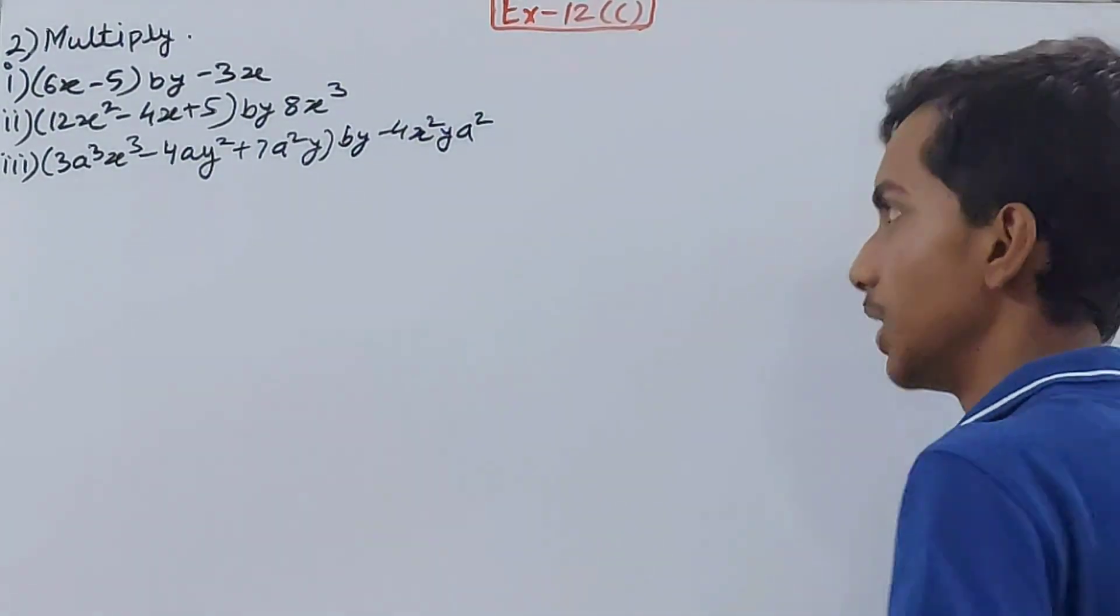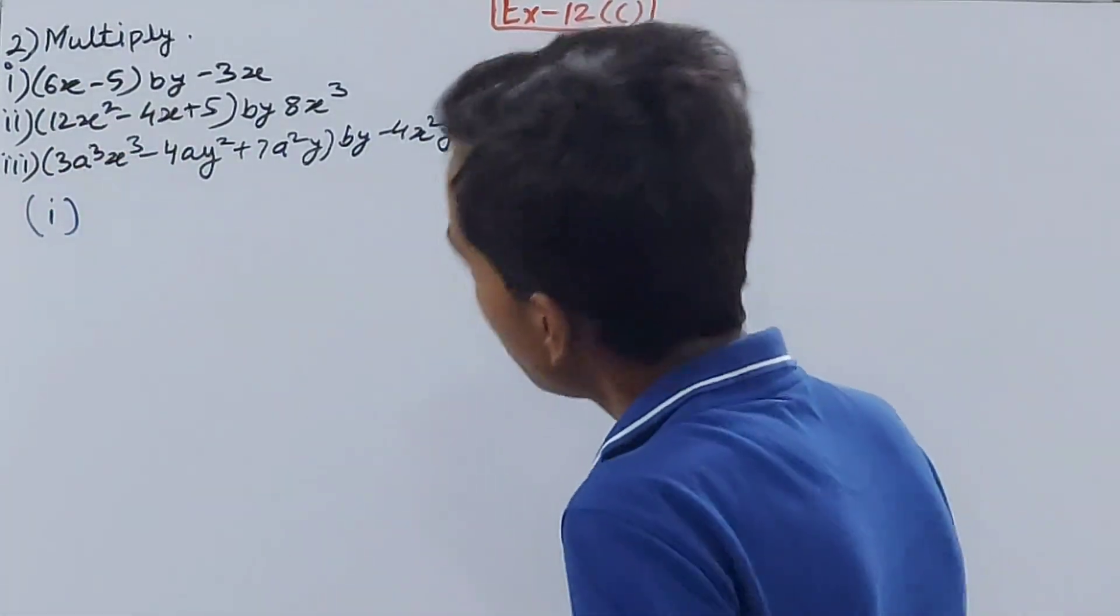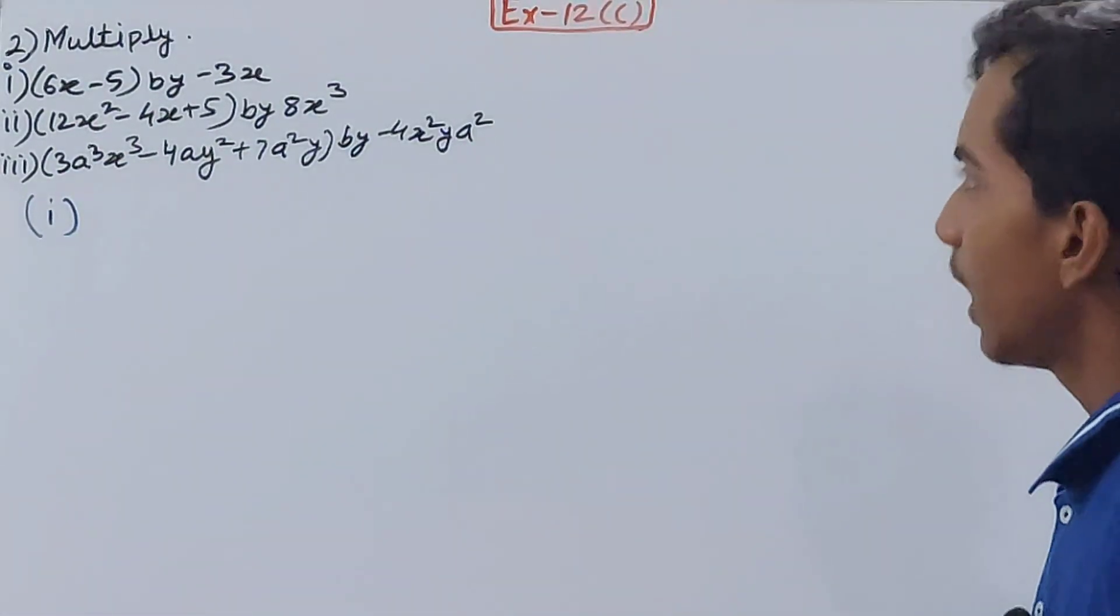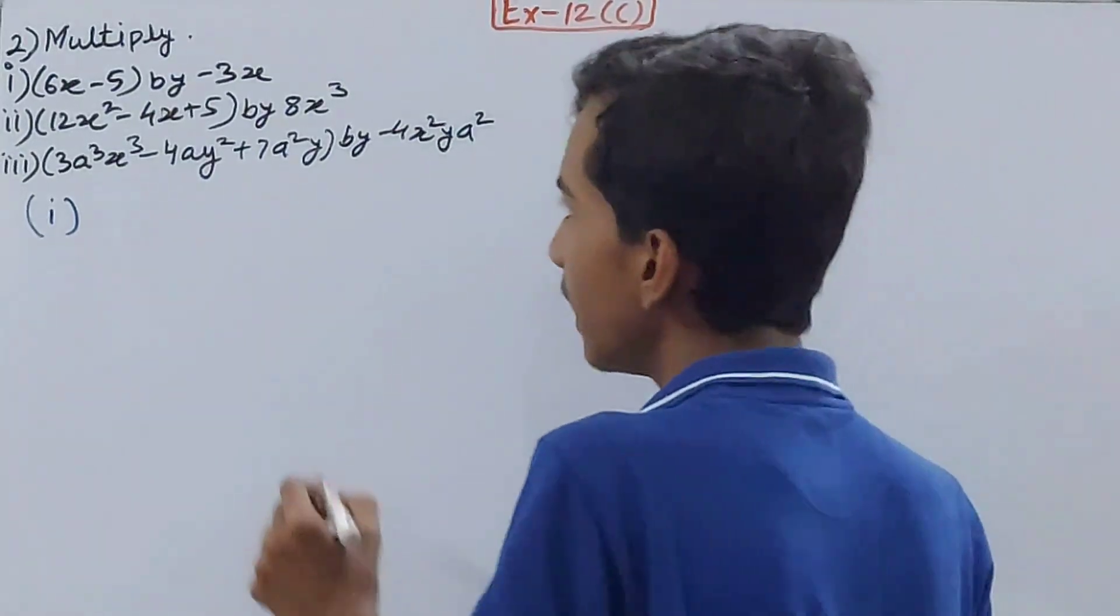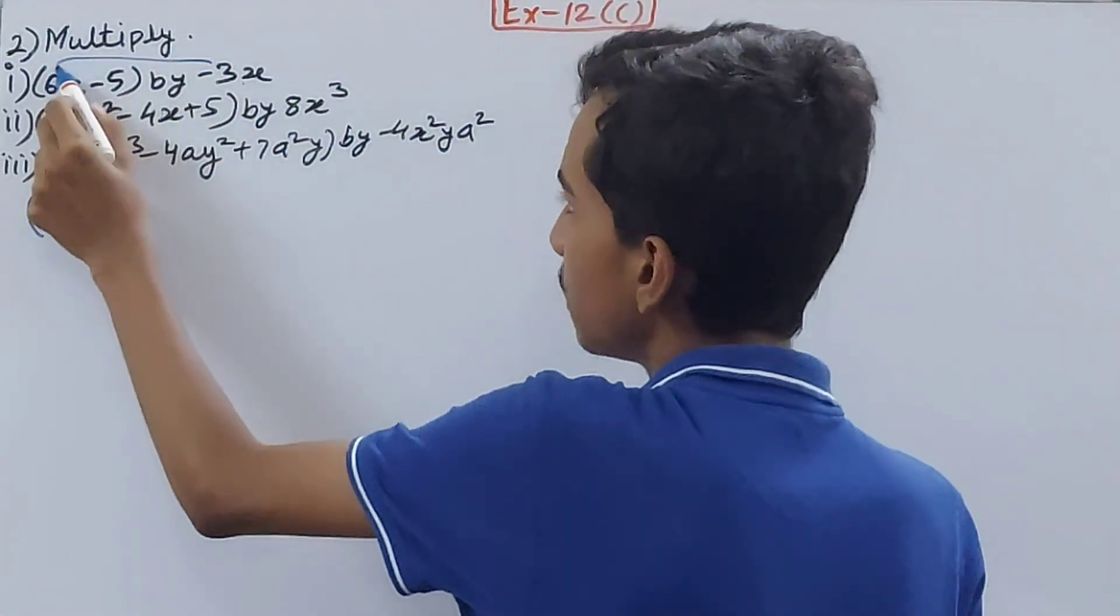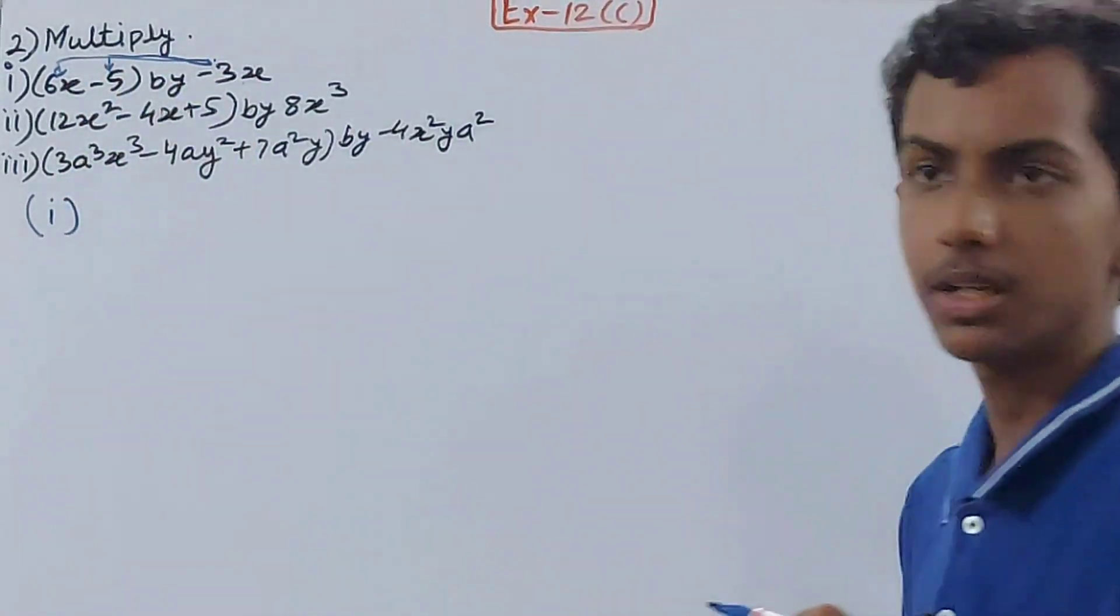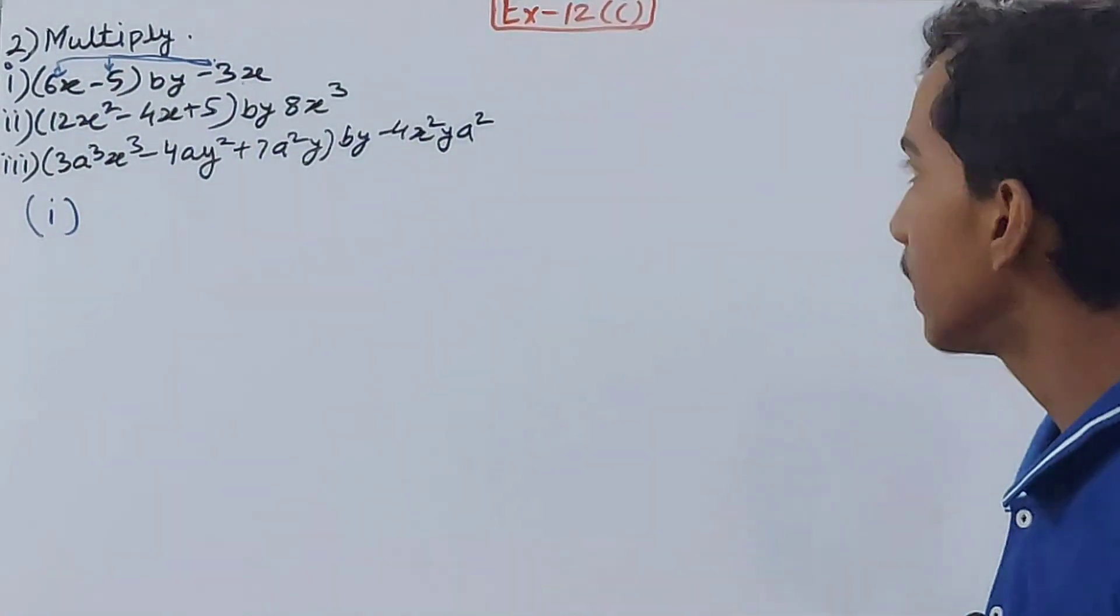First one: (6x - 5) by -3x. You simply have to take this -3x, multiply it with 6x, and take the same -3x and multiply it with -5, and you will get your answer.